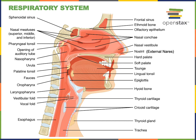The larynx is commonly referred to as the voice box, and the opening of the larynx is the glottis. On either side of the glottis are the vocal folds or vocal cords that vibrate to produce sound for speech. Air then flows from the larynx down into the trachea. The larynx is located just anterior to the esophagus and just inferior to the hyoid bone at about the level of the fourth through sixth cervical vertebrae.